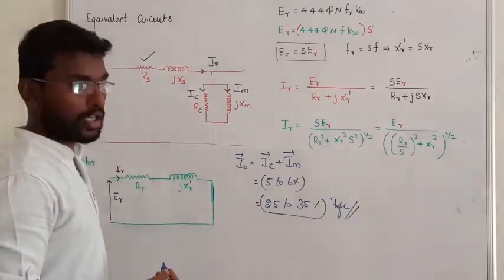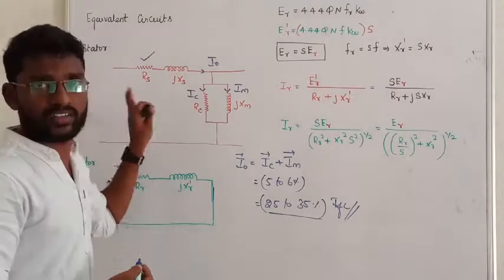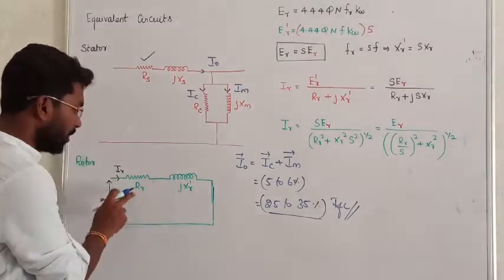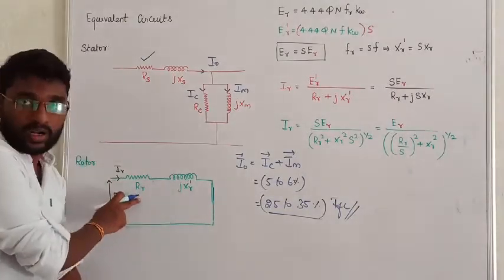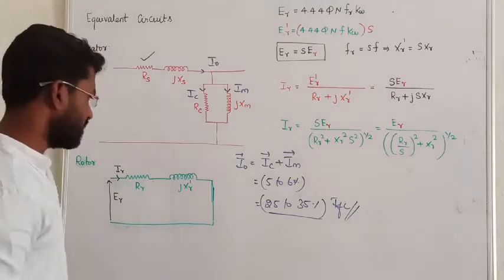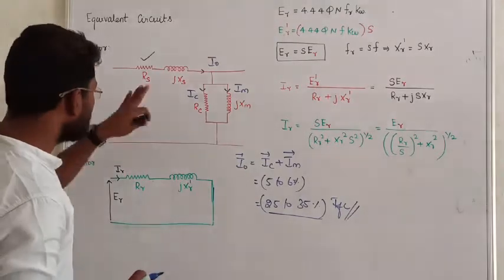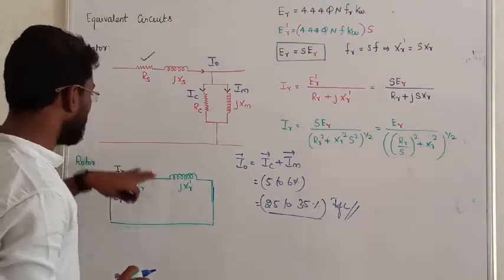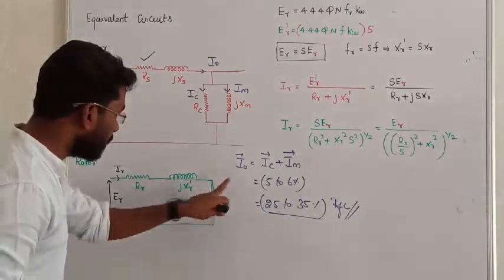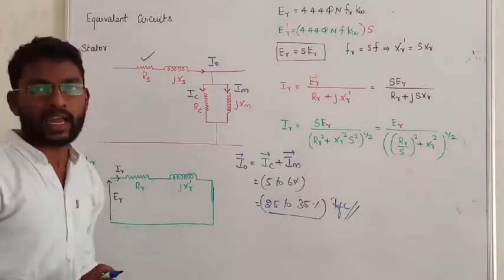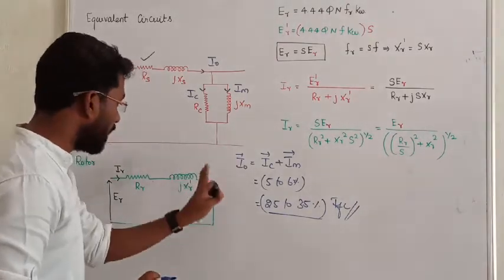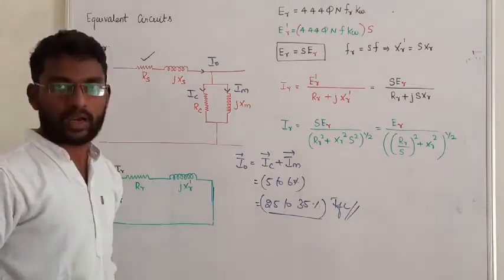This is the no-load equivalent circuit or standard equivalent circuit. At the rotor side we include rotor resistance and rotor reactance — that is leakage reactance. This is the equivalent circuit of the standard rotor. The mechanical load is coupled on to the rotor, and the mechanical loading is projected upon the rotor.